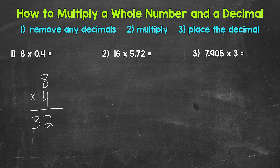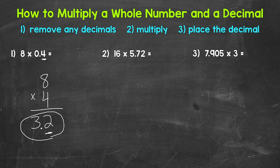Lastly, our third step: we place the decimal in our answer. So how many digits are to the right of a decimal? Looking at the original problem, we have 1 — this 4 right here. So our answer needs 1 decimal digit as well — 1 digit to the right of the decimal. So 1 digit, and the decimal goes in between the 3 and the 2. So our final answer is 3 and 2 tenths. 8 times 4 tenths equals 3 and 2 tenths.